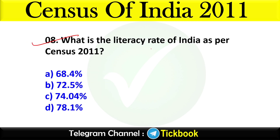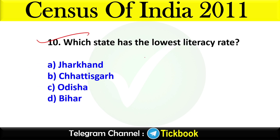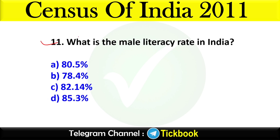Question eight: What is the literacy rate of India as per Census 2011? Option number C is the right answer: 74.04 percent. Question nine: Which state has the highest literacy rate? Option number A: Kerala. Question ten: Which state has the lowest literacy rate? Option number D: Bihar. Question eleven: What is the male literacy rate in India? Option number C: 82.14 percent.